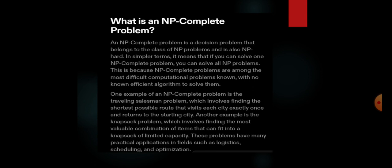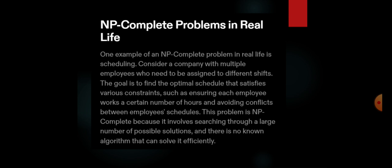One of the examples for an NP complete problem is the traveling salesman problem which involves finding the shortest possible route that visits each city exactly once and returns to the starting city. Another example is the knapsack problem which involves finding the most valuable combination of items that fit into a knapsack of limited capacity. These problems have many practical applications in the field of logistics, scheduling and optimization.